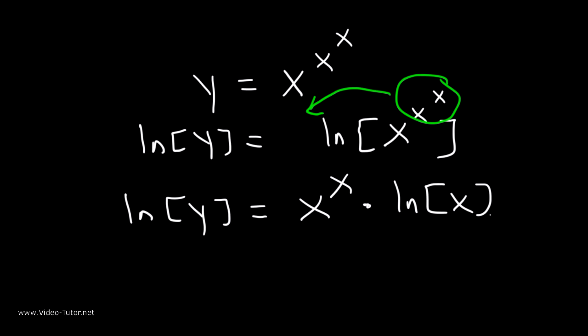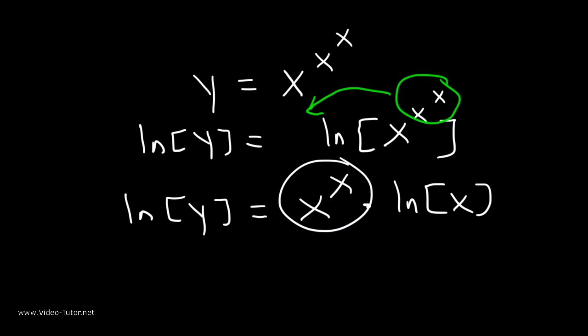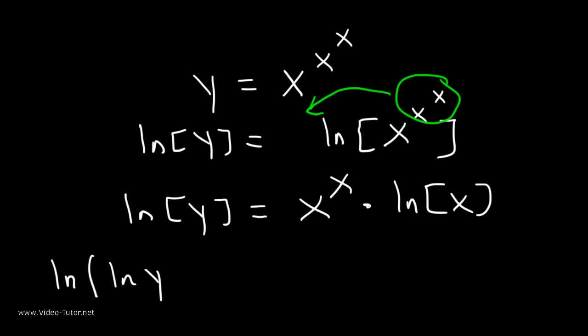Now, it's not wise to take the derivative of the function yet. Because if we don't know what the derivative of x to the x to the x is, chances are we won't know the derivative of x to the x. So therefore, the only thing we can do is take the natural log of both sides one more time. So we're going to have the natural log of the natural log of y, and that's equal to the natural log of x to the x times the natural log of x.